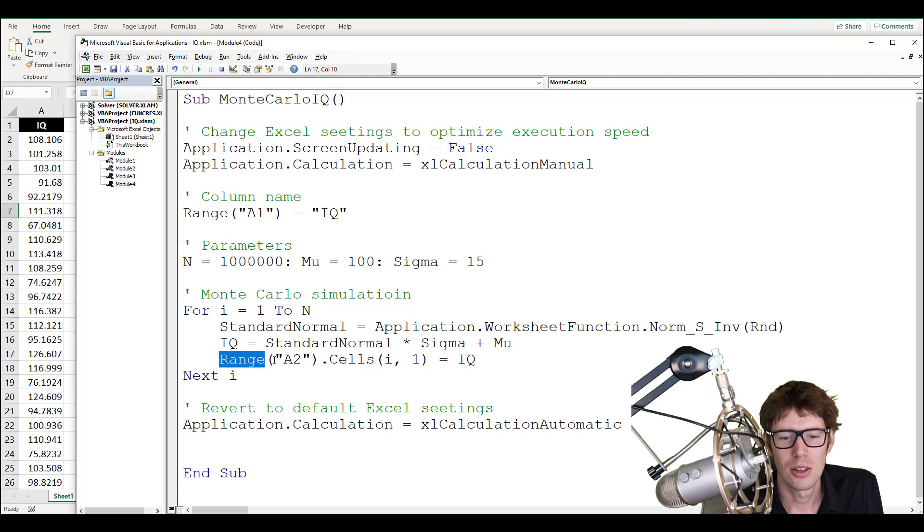And I just have to output that in the worksheet. So range A2.cells i1. For the first iteration, that will be a cell A2. When i is equal to two, that will be one below A2. So that will actually be A3, and so on and so forth.